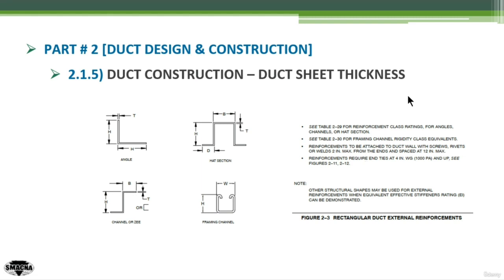You can also see the rigidity class and all the details on these tables from SMACNA. There is a note mentioned in SMACNA that other structural shapes may be used for external reinforcement when equivalent effective stiffness rated EI can be demonstrated. There are also notes at the top right of the screen: see Table 2-29 for reinforcement class rating for angles, channels, or hat sections; see Table 2-30 for framing channel rigidity class equivalents. Reinforcements are to be attached to duct wall with screws, rivets, or welds — 2 inches maximum from the ends and spaced at 12 inches maximum. Reinforcements require end ties at 4-inch water gauge or 1000 Pa and above.